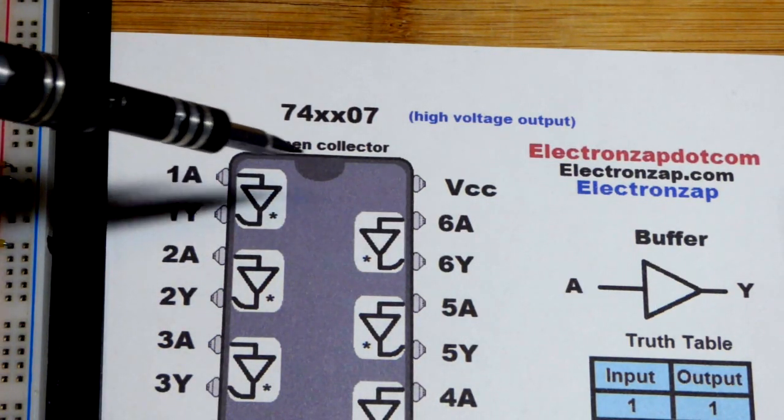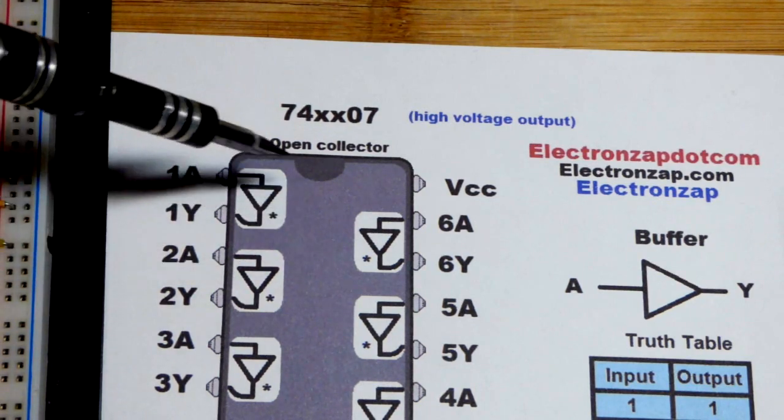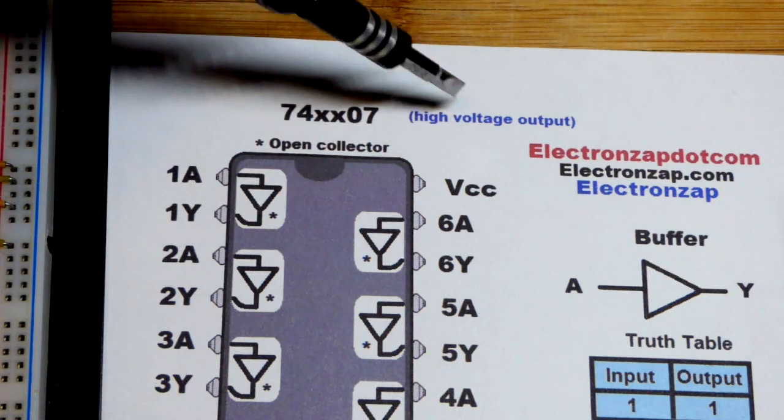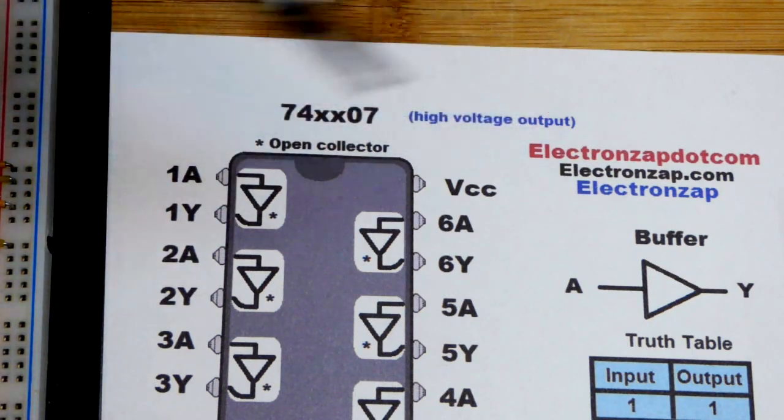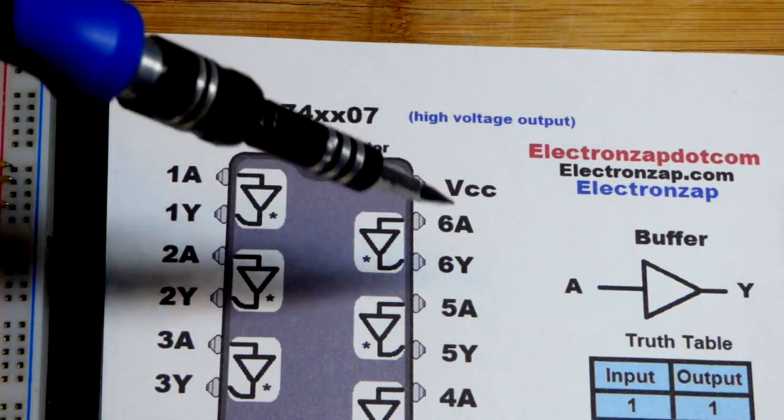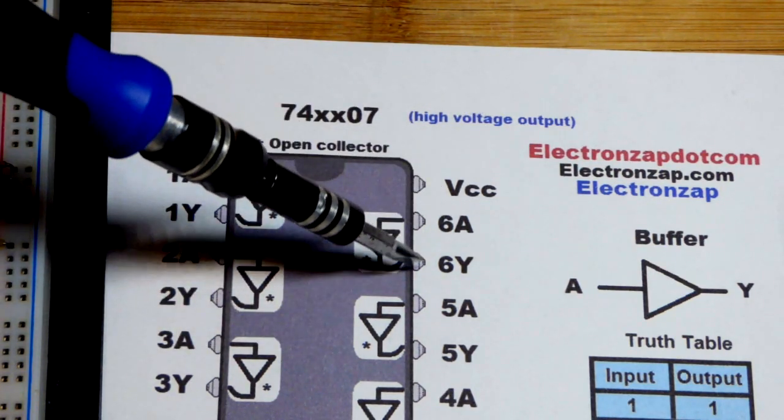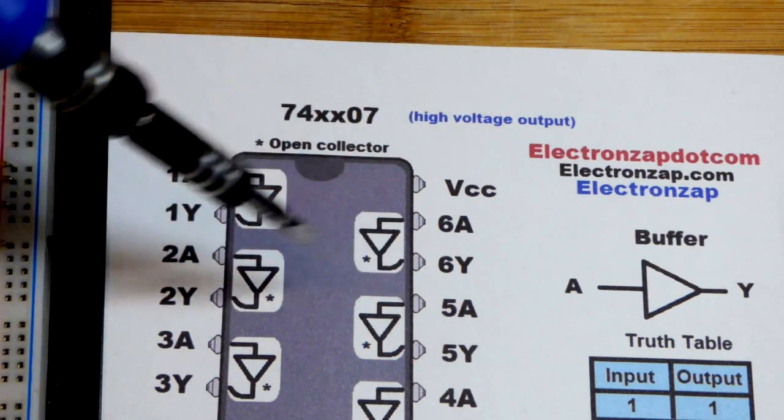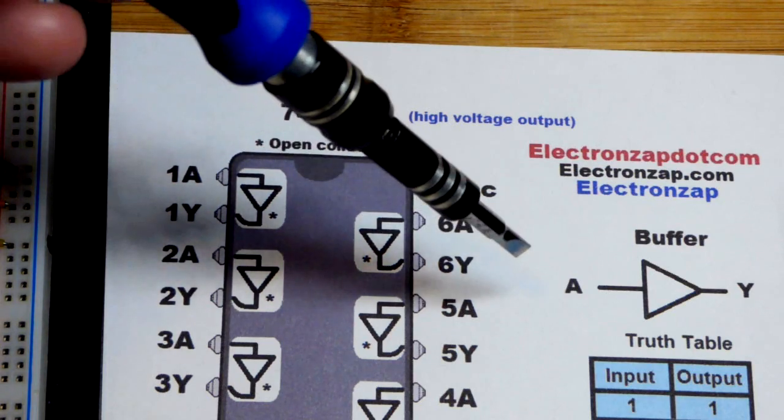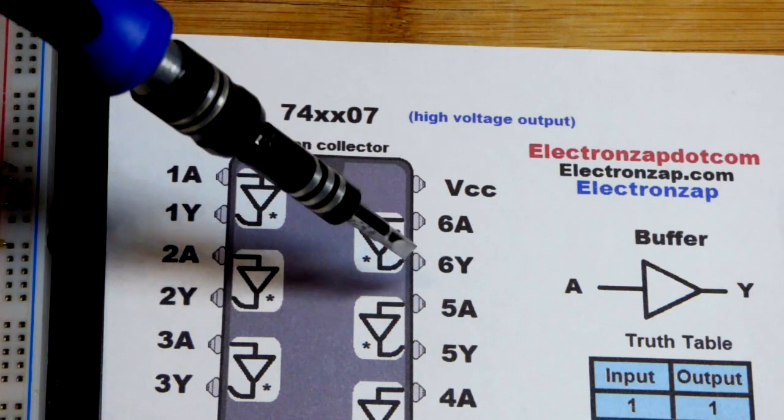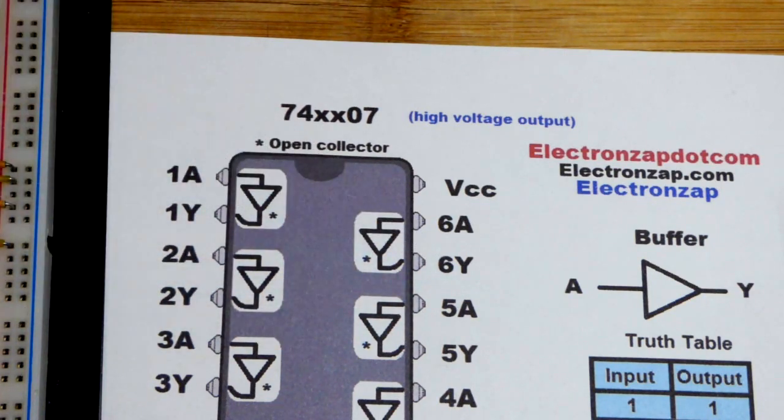There's a little star there that means it's open collector. We'll get to that a little bit later. When you check the data sheet of the 07, it's a high voltage output. You can actually use a separate power supply to provide the high signal at the output. You can use a higher voltage than the 5 volts that the integrated circuit depends on. The output either goes to ground or it turns off. That's what open collector means.